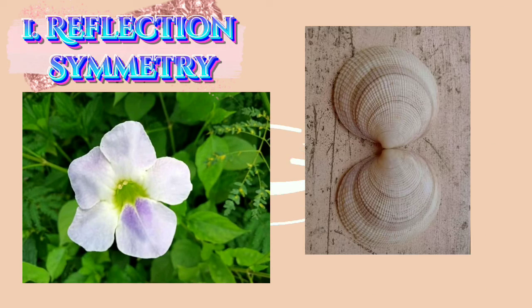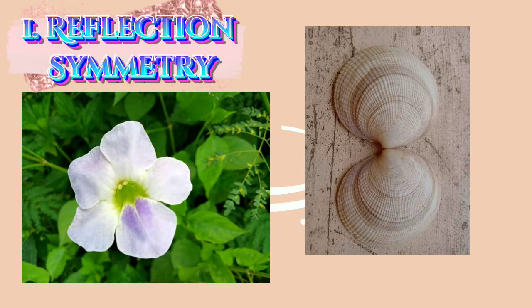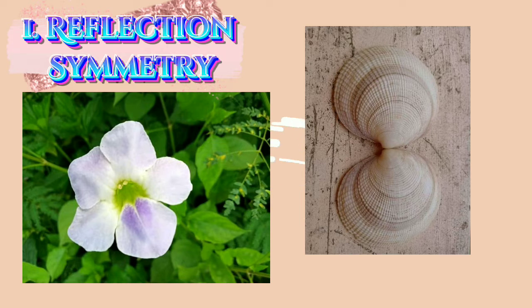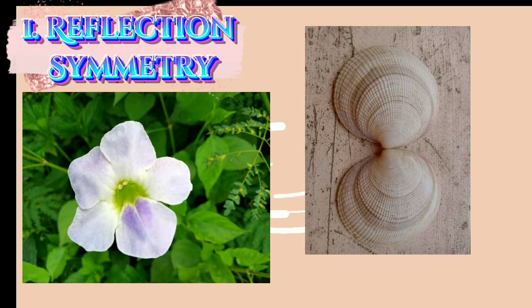Number one is reflective symmetry. It is a type of symmetry where one half of the object reflects the other half of the object. It is also known as mirror symmetry.